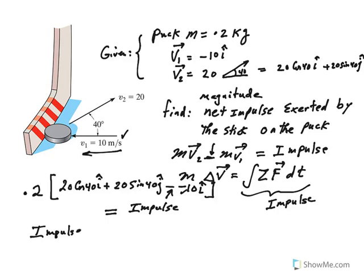If you calculate this impulse vectorially, you end up getting 5.064î plus 2.572ĵ. So basically you have an impulse in the x direction and an impulse in the y direction.